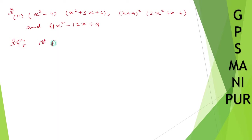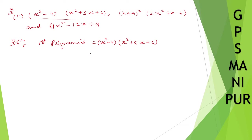Solution: take the first polynomial, that is x squared minus 4 into x squared plus 5x plus 6. So x squared minus 4 you can write down as x squared minus 2 squared. And for the quadratic x squared plus 5x plus 6, I can split the middle term — the product is 6 and sum is 5, so 3 plus 2 equals 5.